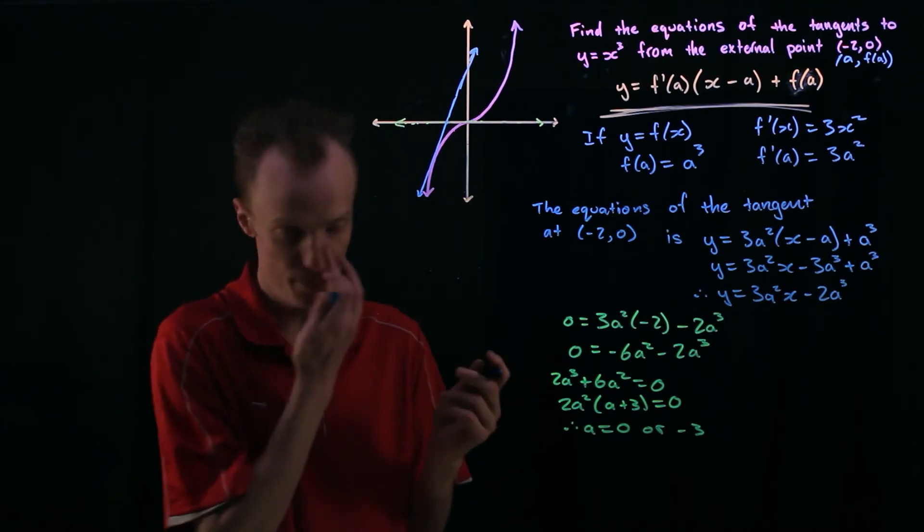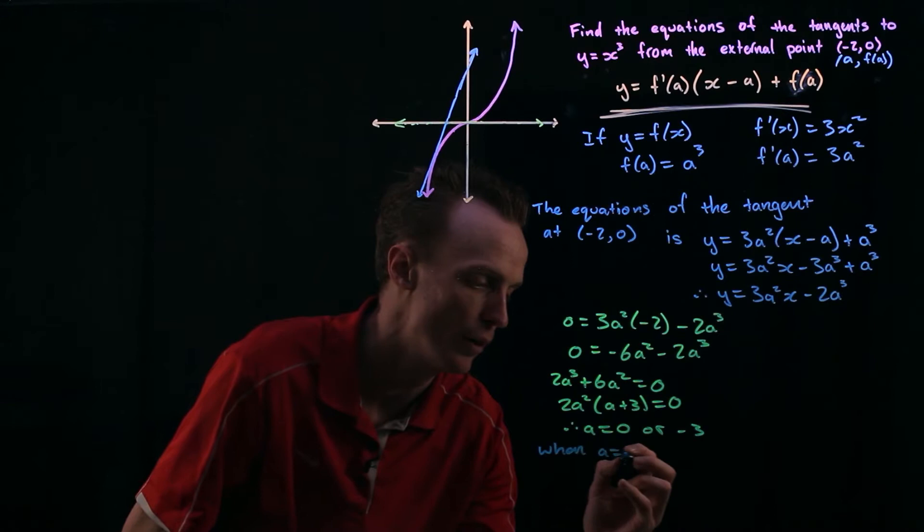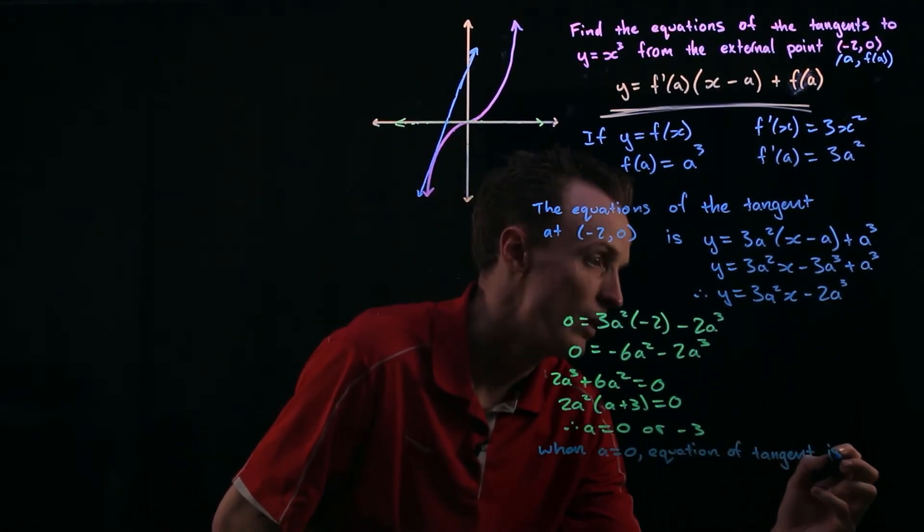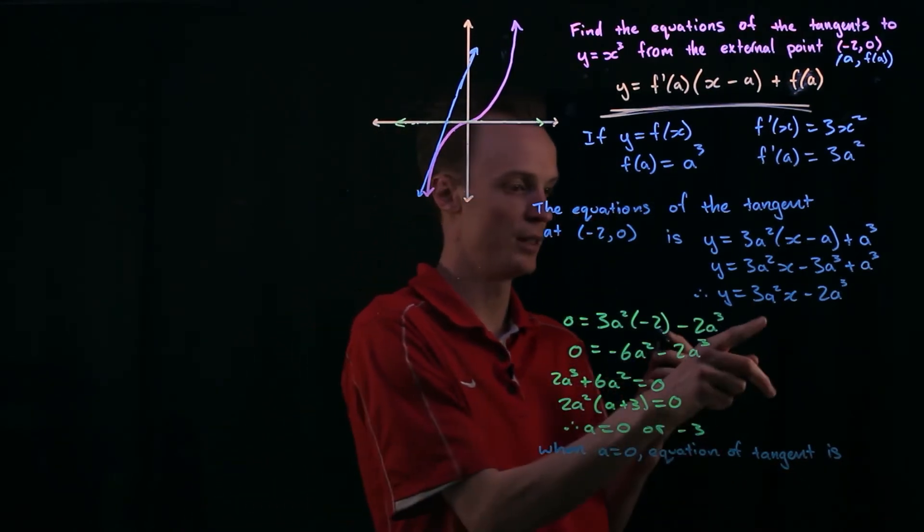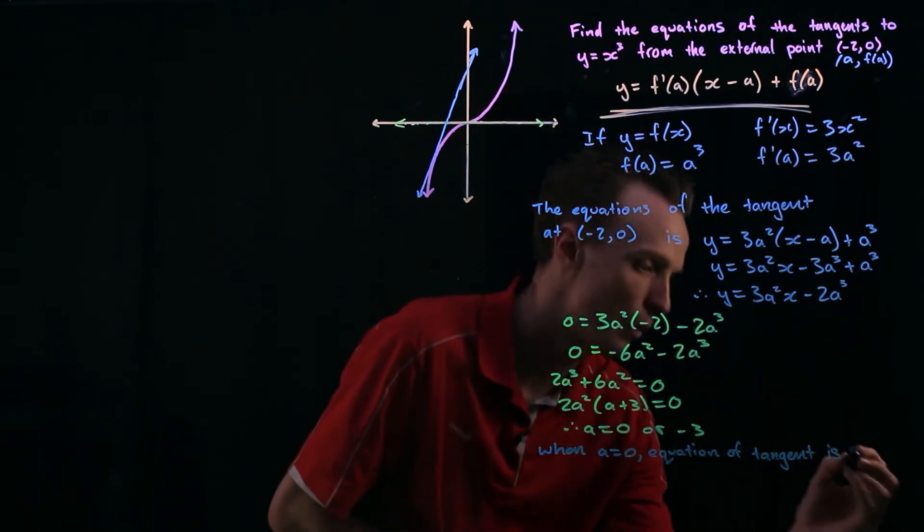So we know that when my a is equal to 0 that the equation of the tangent is going to be 0 into this which will be 0 and 0. So it will be y equals 0.